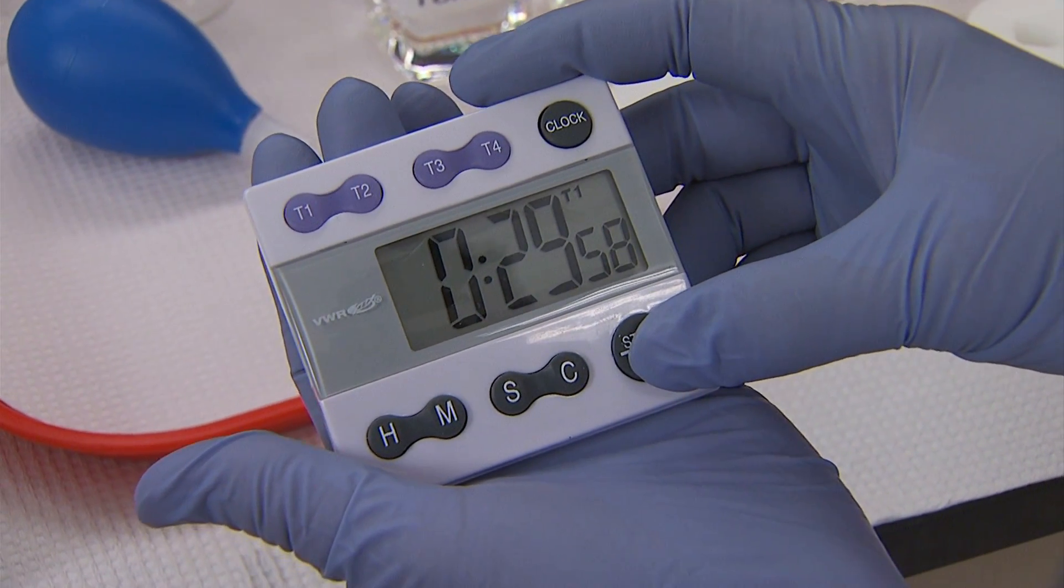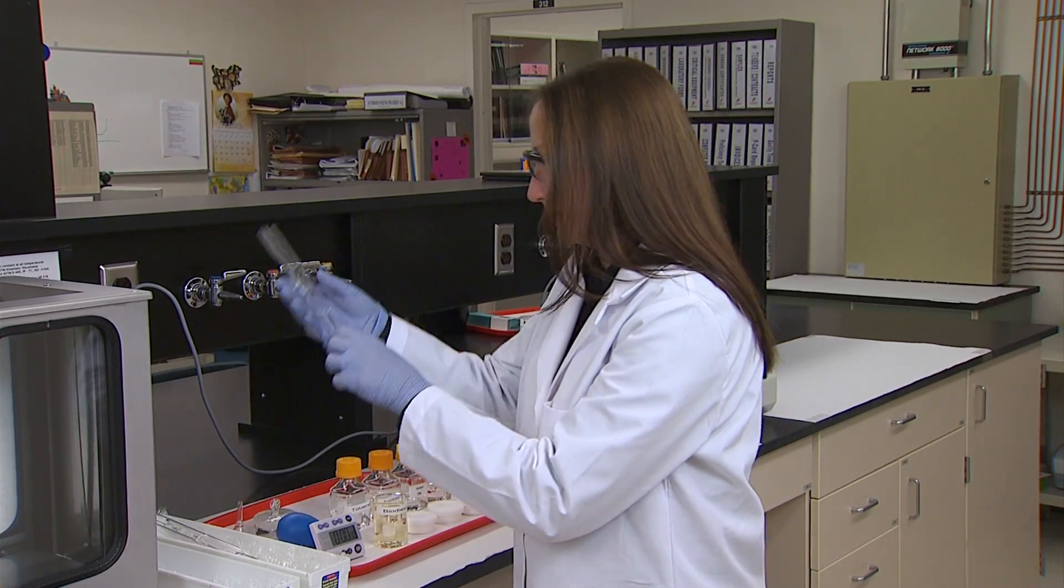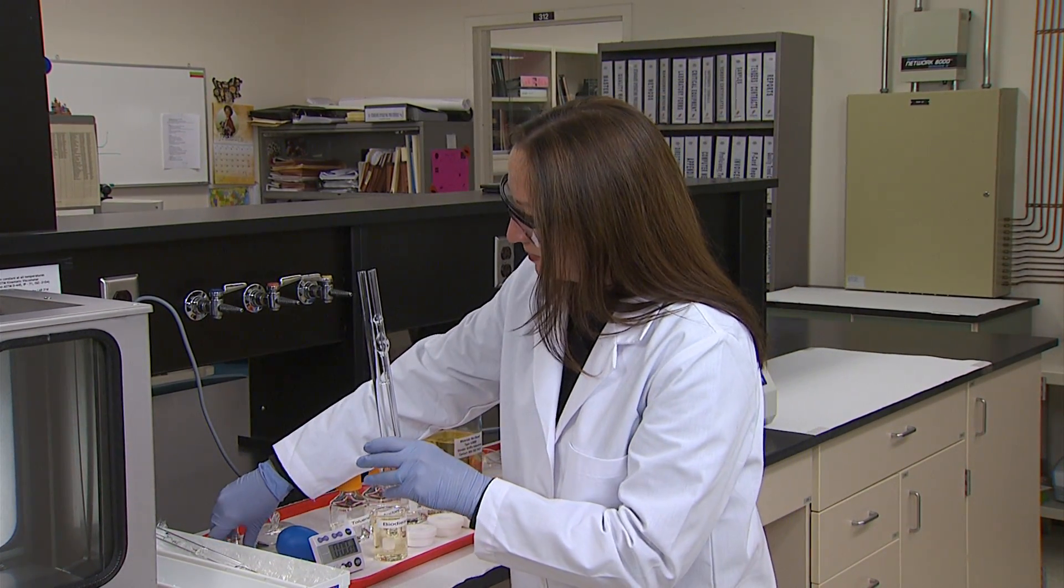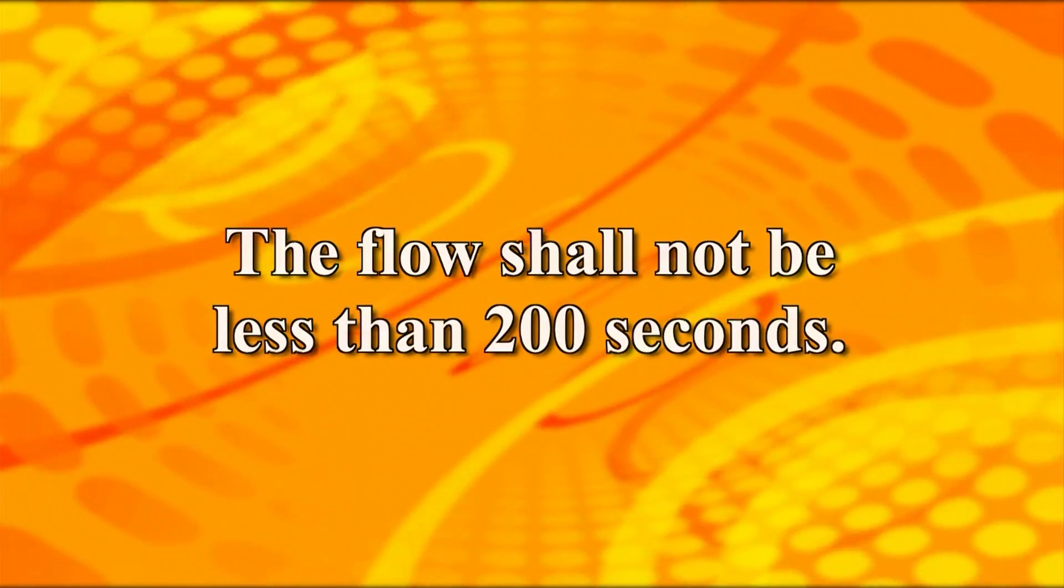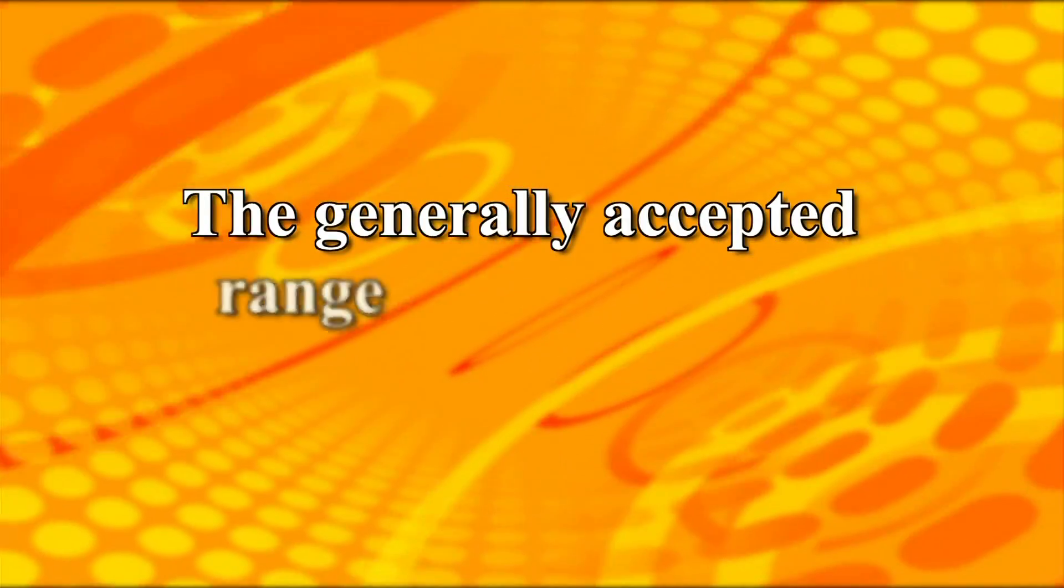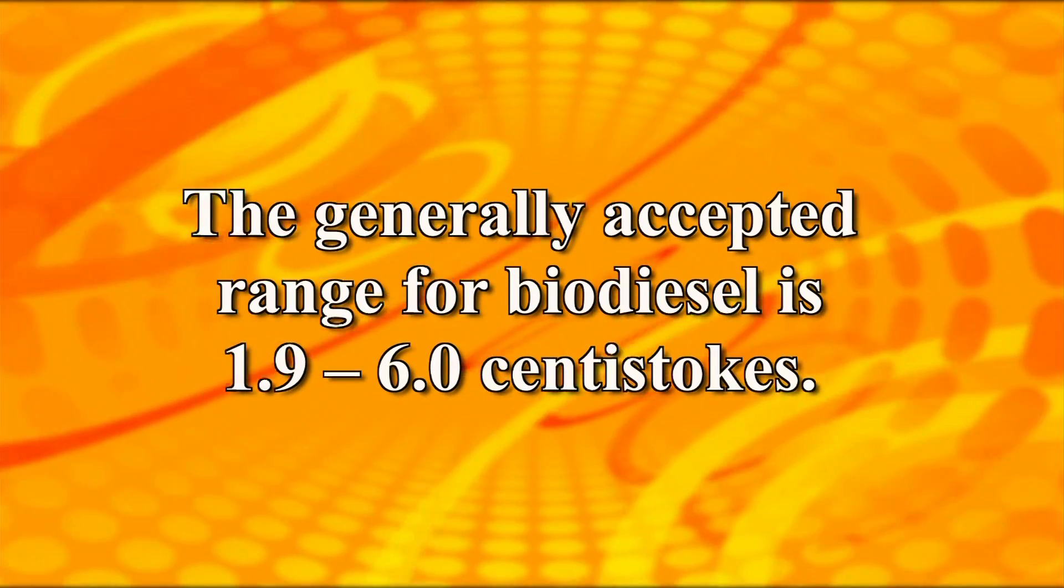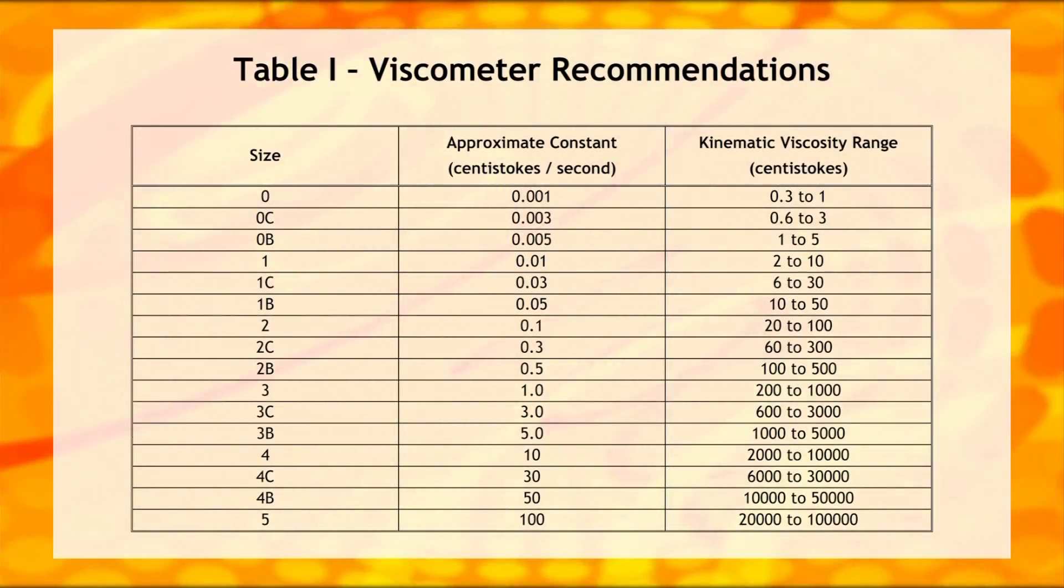To analyze a standard or sample, select a clean, dry, calibrated viscometer having a range over the estimated kinematic viscosity. The flow shall not be less than 200 seconds. The generally accepted range for biodiesel is 1.9 to 6.0 centistokes, so a number one viscometer may be a good choice. Refer to table 1 for specific viscometer recommendations for the expected viscosity range.